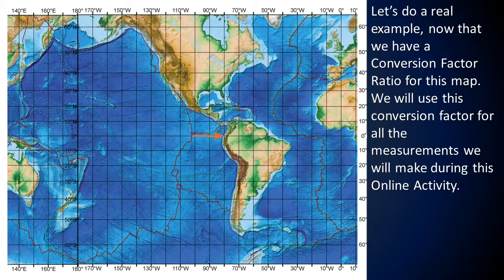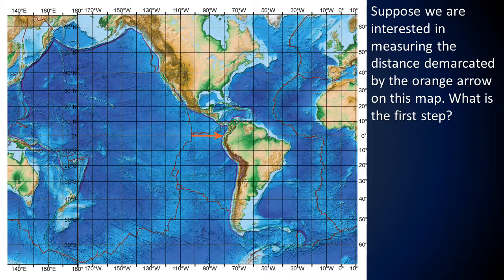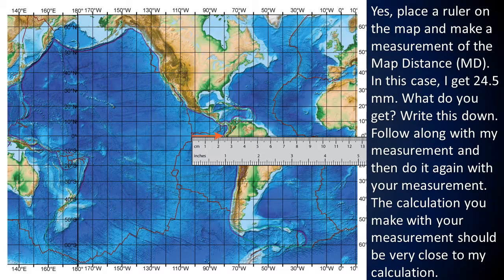Let's do a real example now that we have a conversion factor ratio for this map. We will use this conversion factor for all measurements during this online activity. Suppose we are interested in measuring the distance demarcated by the orange arrow on this map. The first step is to place a ruler on the map and make a measurement of the map distance. In this case, I get 24.5 millimeters.